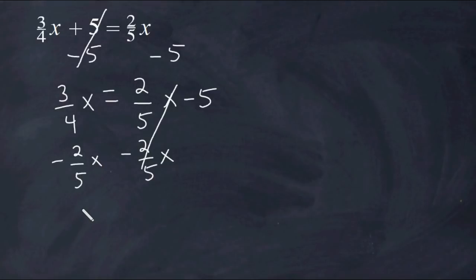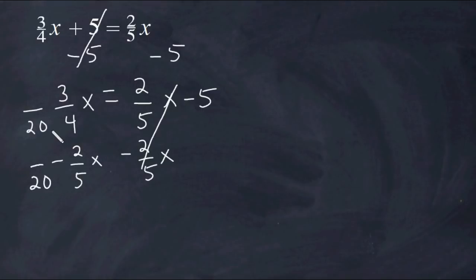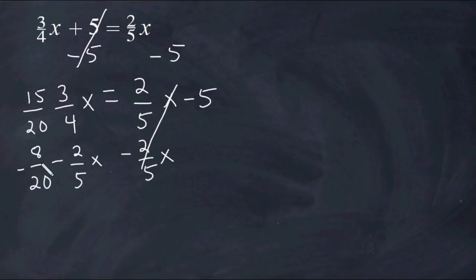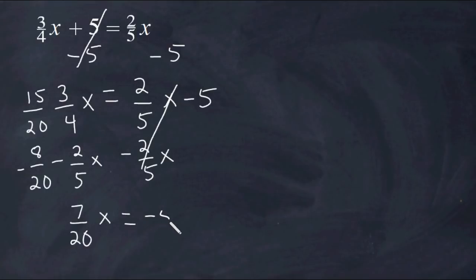Because we are subtracting fractions, we have to make sure we have a common denominator. The lowest common denominator of 4 and 5 is 20. We change that 4 into a 20 and this 5 into a 20 as well. Because this 4 increased by a factor of 5, we increase the 3 by a factor of 5, giving us 15. Because this 5 increased by a factor of 4, we do the same with the numerator: 2 times 4 is 8. So now we have 15 twentieths take away 8 twentieths, which leaves us with 7 twentieths x, and that equals the negative 5 remaining on the right-hand side.